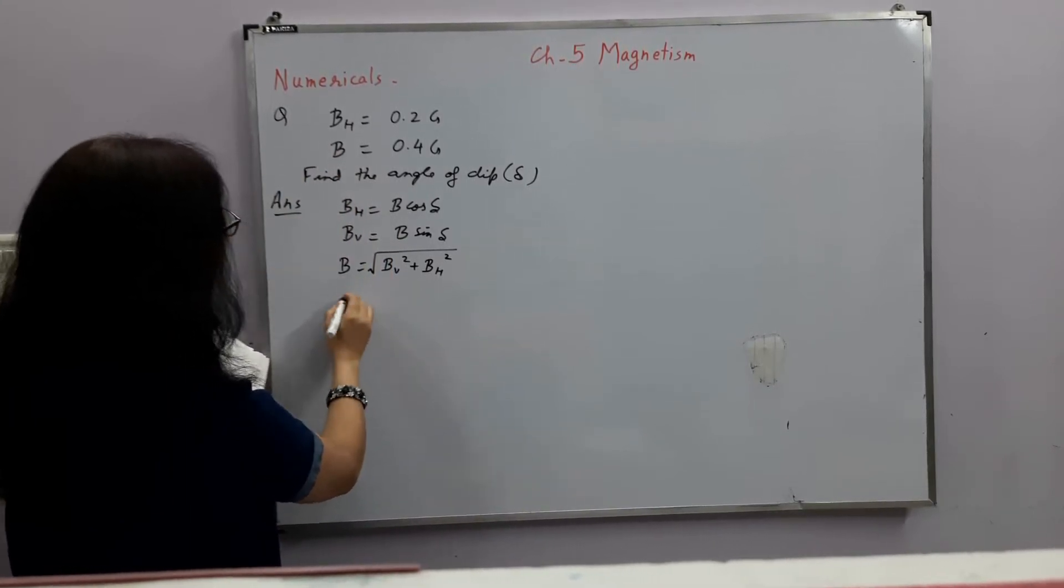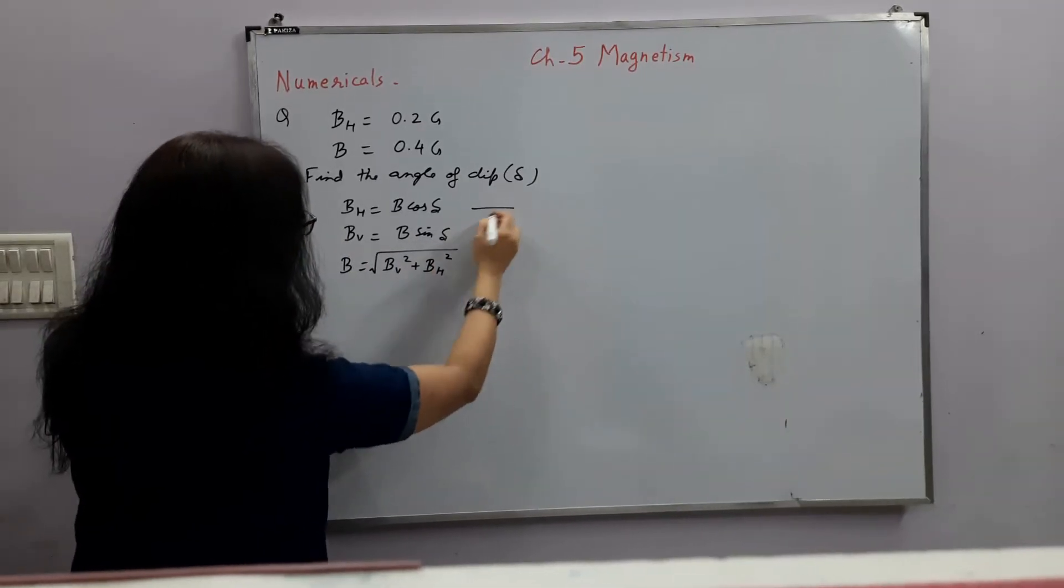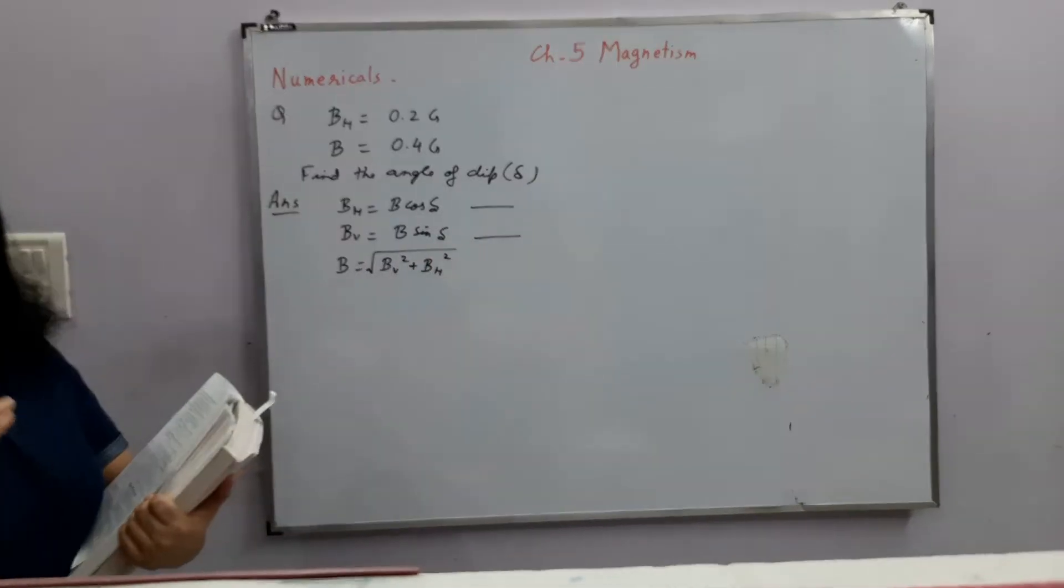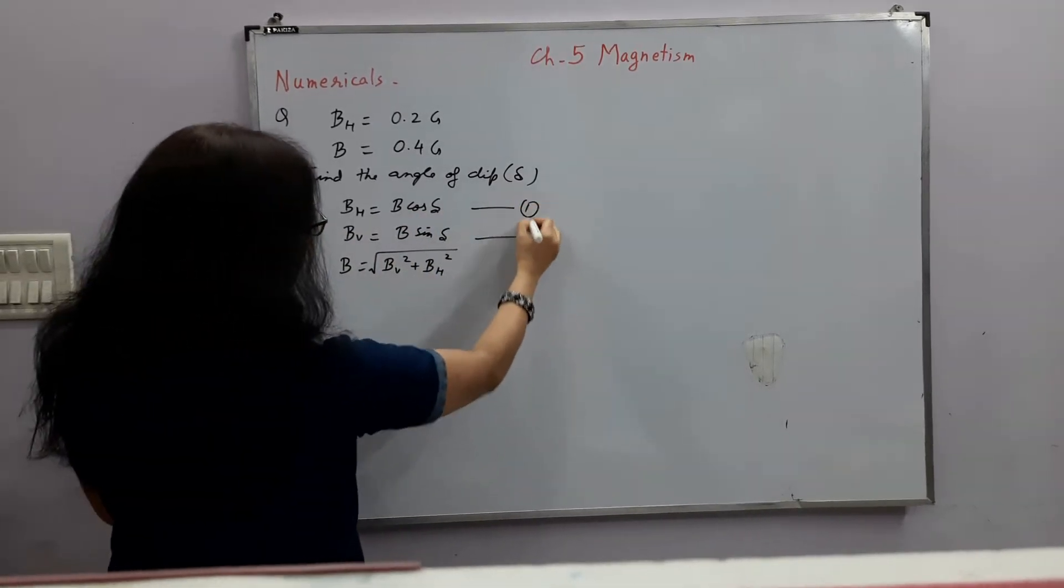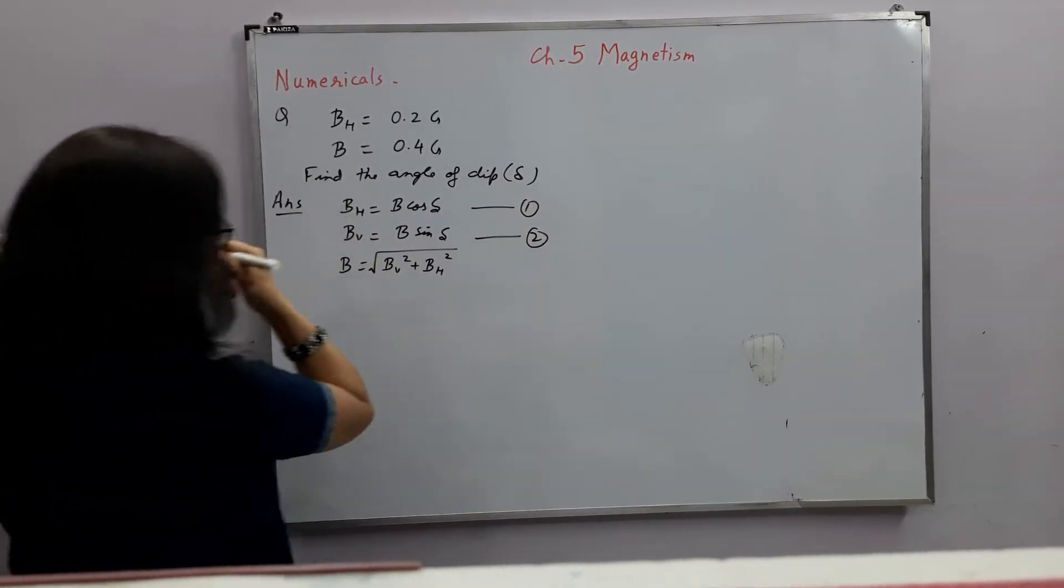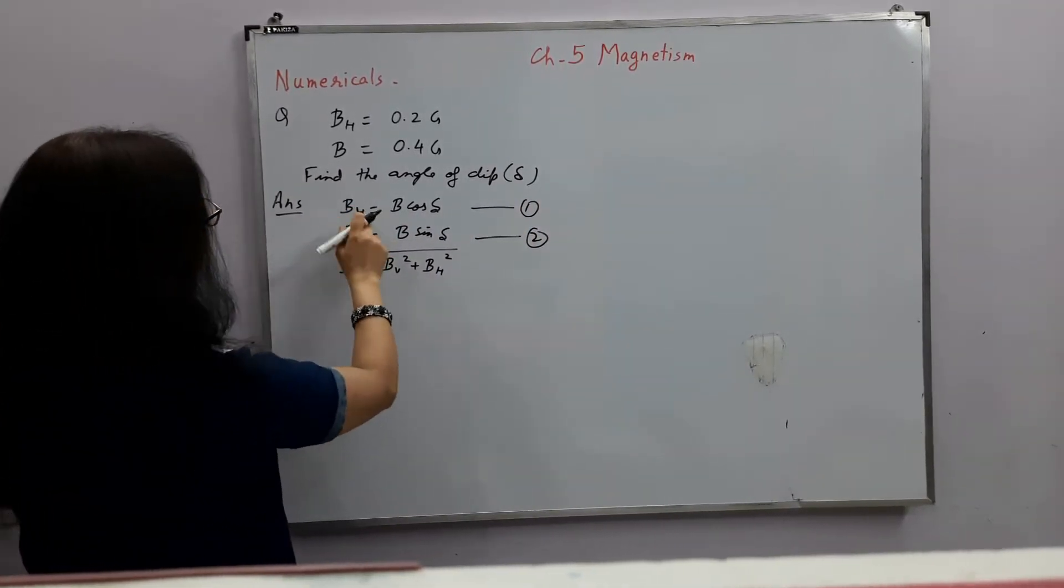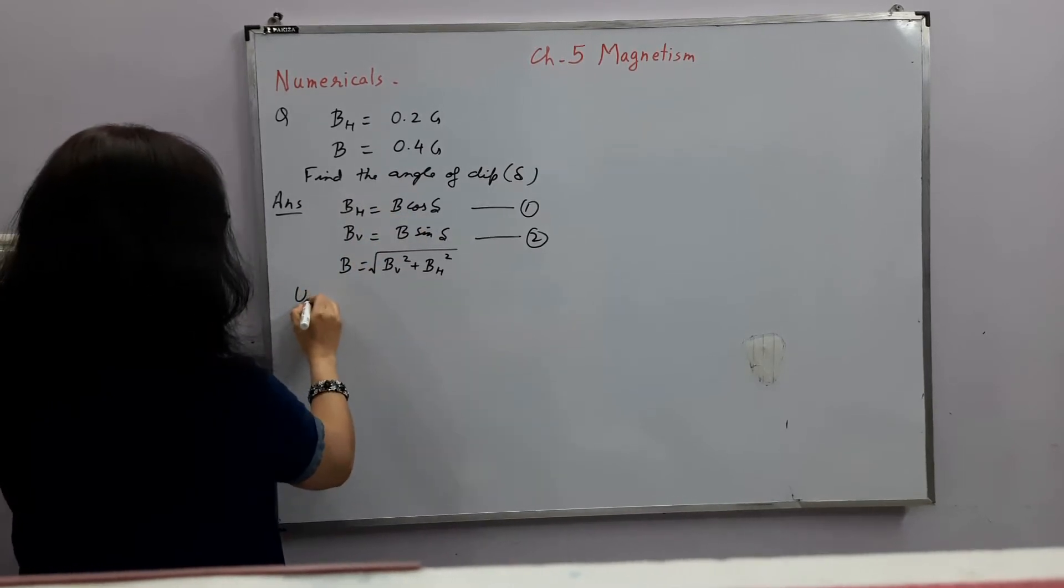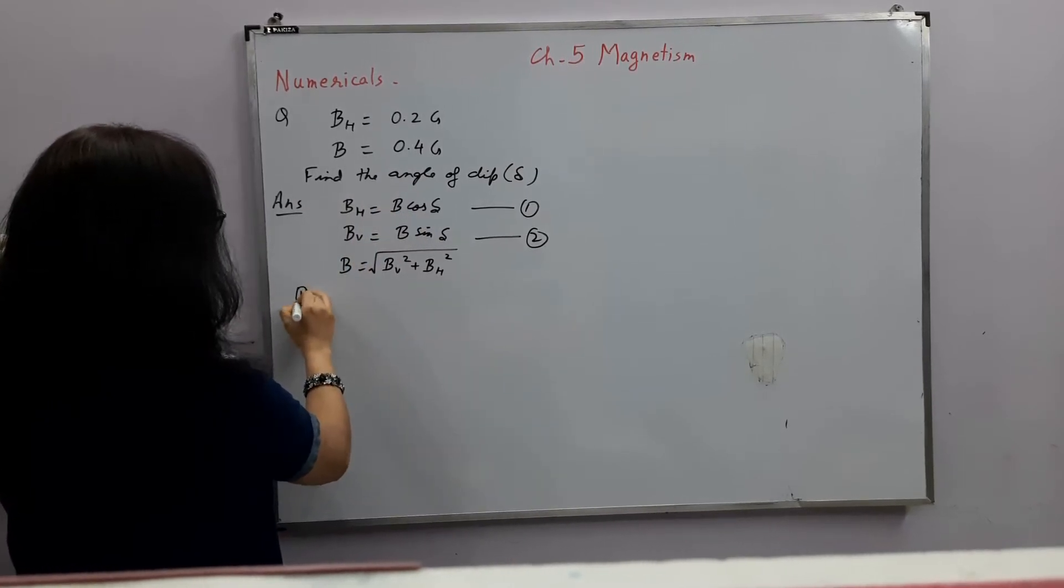So from here, you can take this way. Let's mark this as equation 1 and this as equation 2. These are the three relations which we know and we directly know these two values. So you can use directly equation 1.